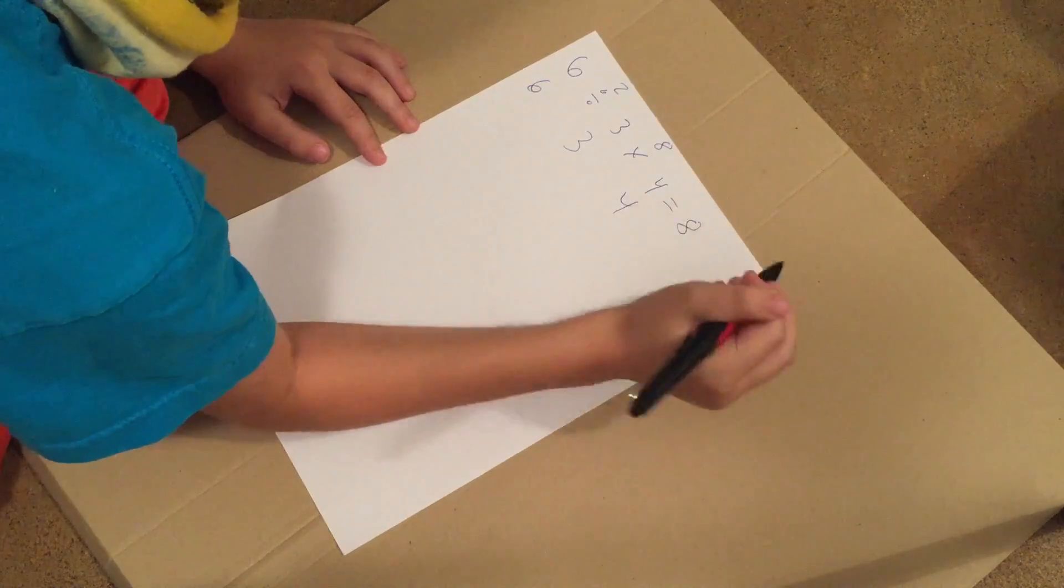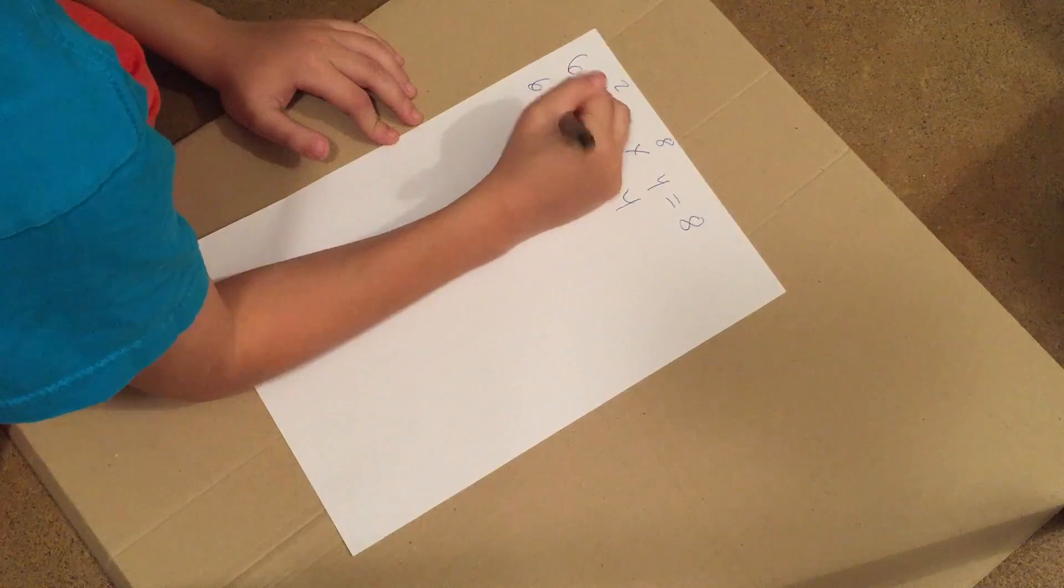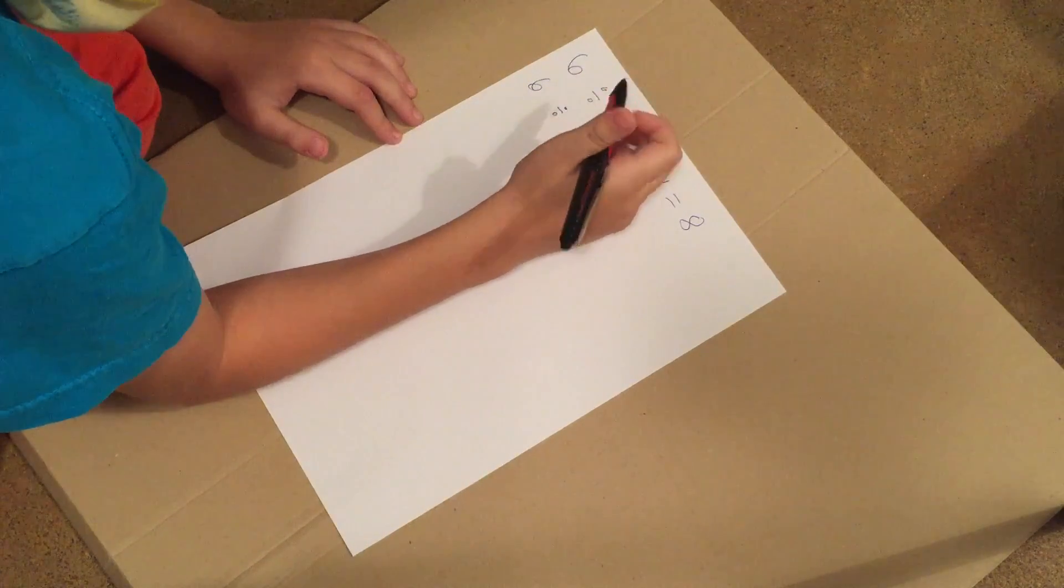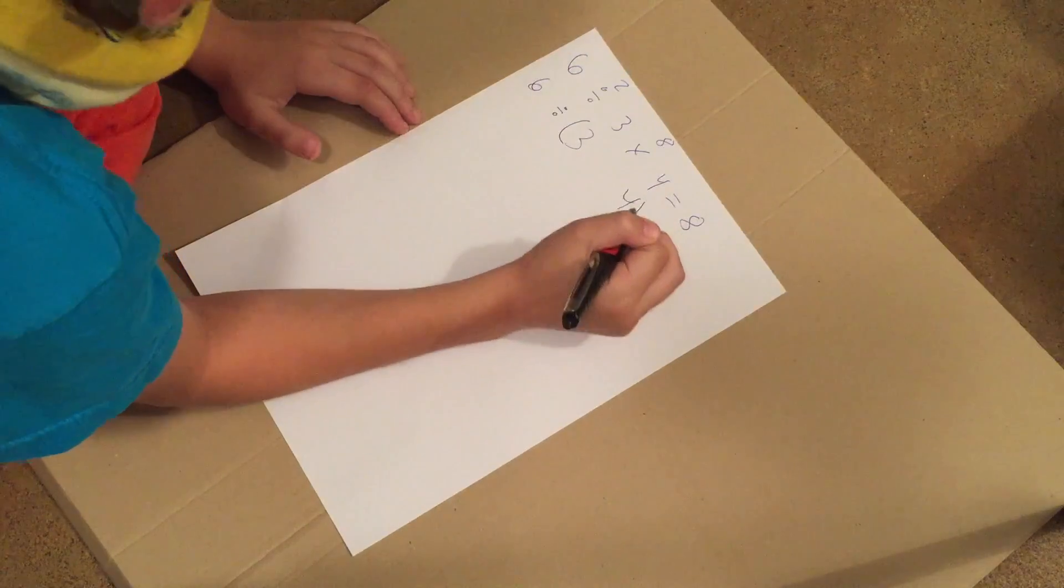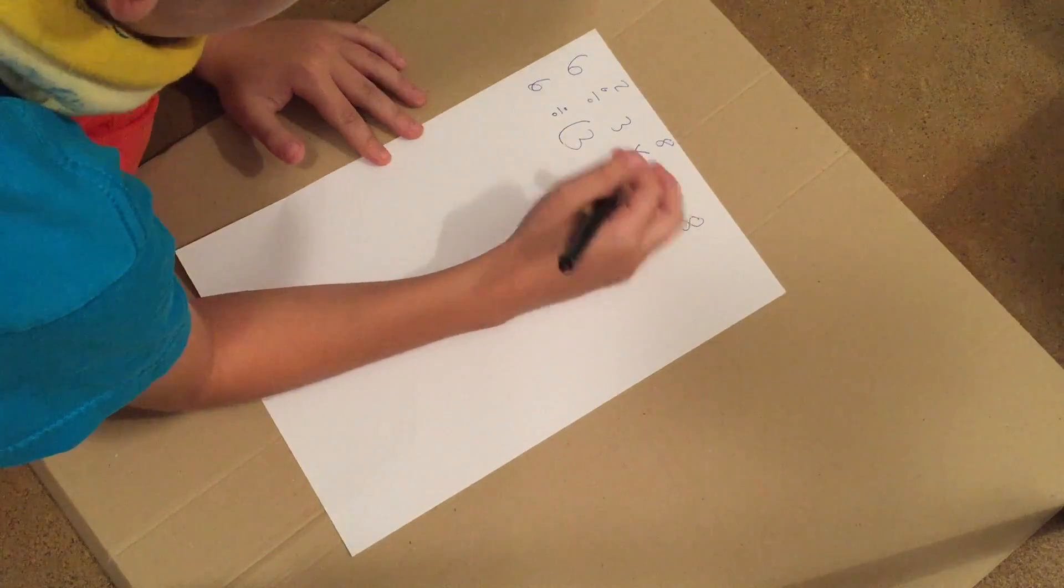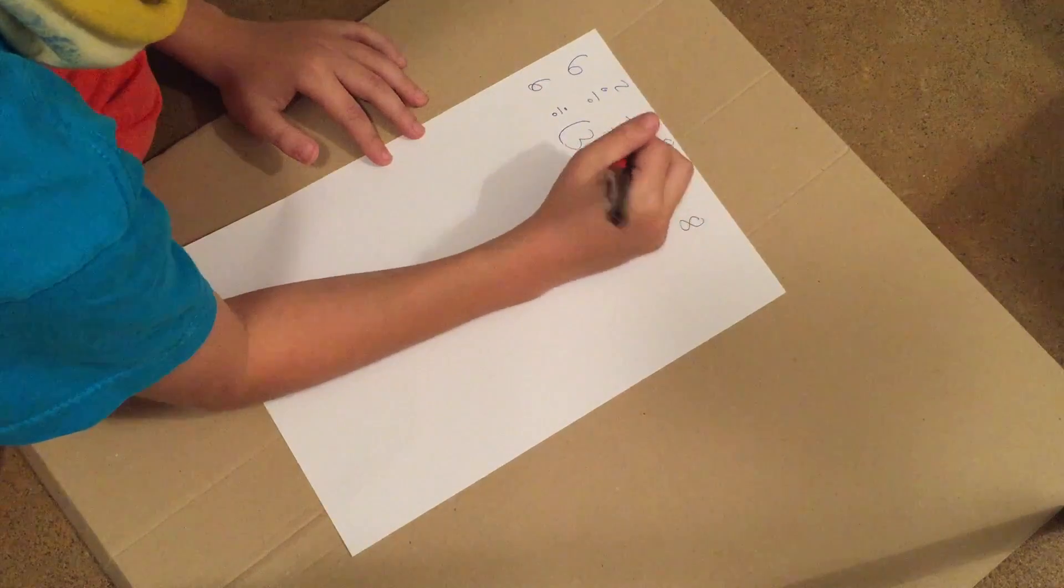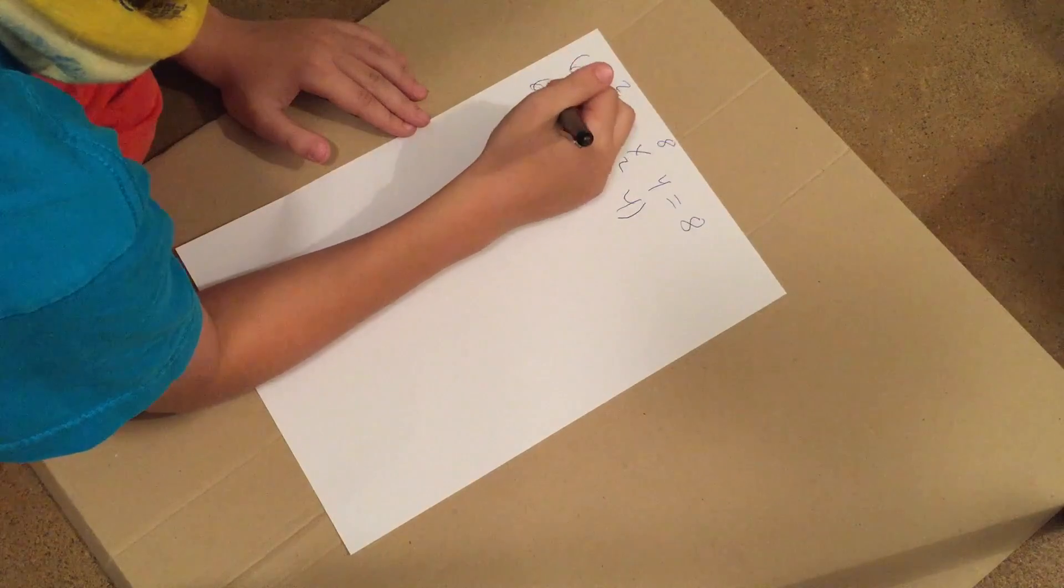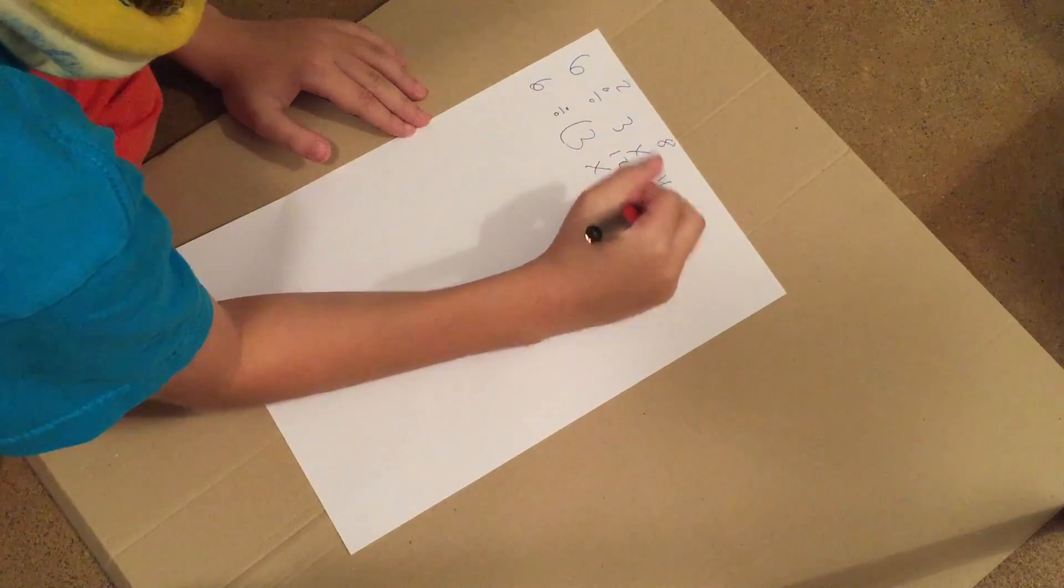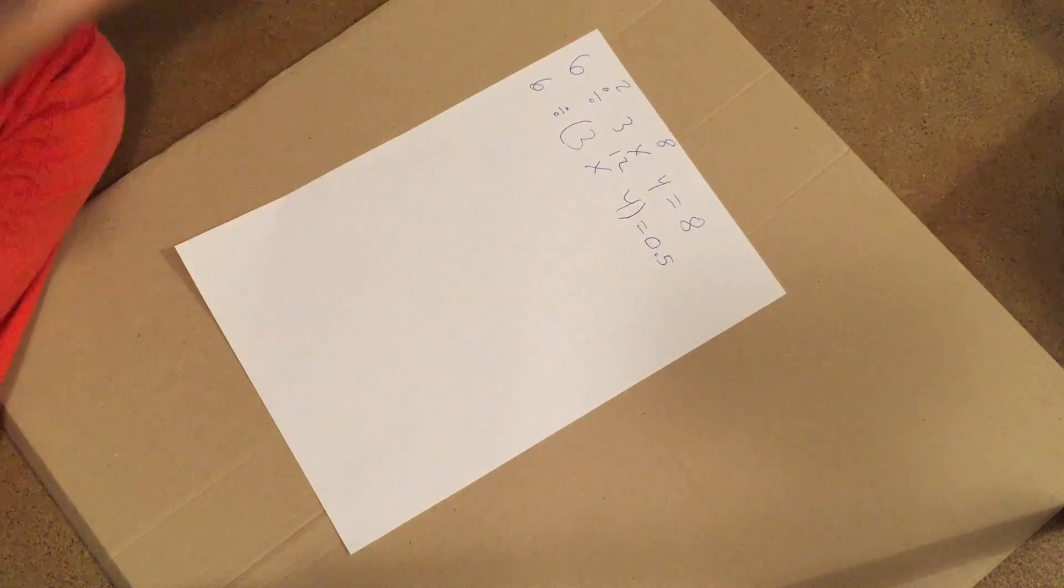But now with the parentheses. 6 divided by 3 would be 3 because there's a parentheses in front of it, parentheses in front of 4. And no times. First you do 3 times 4 which is 12. Then you do 6 divided by 12 which is 0.5. And that is the answer.